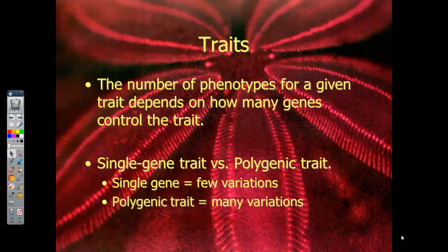In talking about traits, the number of phenotypes for a given trait depends on how many genes control the trait. When we talk about multiple alleles, that means a lot of phenotypes are being controlled by a lot of different genes for one trait. A single gene trait has very few variations, but a polygenic or multiple allelic trait has many variations of its outcome.